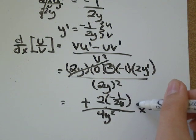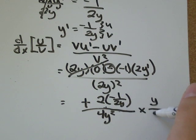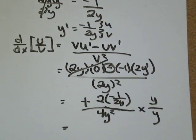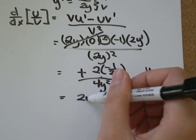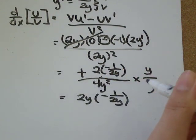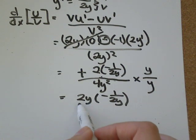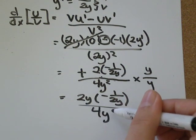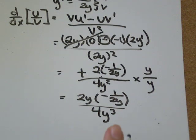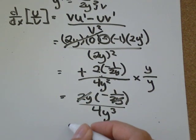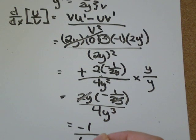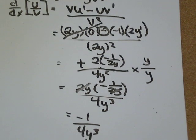I'm going to multiply all this stuff on the top by y and all the stuff on the bottom by y, because y/y is equivalent to the fraction 1/1. And when I do that, I will get 2y times -1/(2y) over 4y³. So this 2y will cancel with that 2y. And I'll be left with -1 on the top over 4y³ on the bottom.